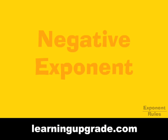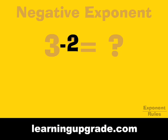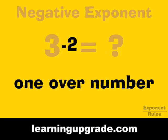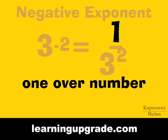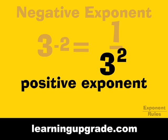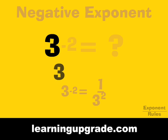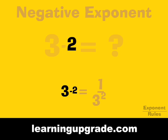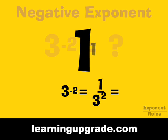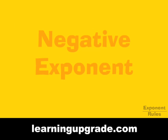When you see a negative exponent, just put 1 over that number with a positive exponent. Example: 3 to the negative 2 power equals 1 over 3 squared, which equals 1 ninth.